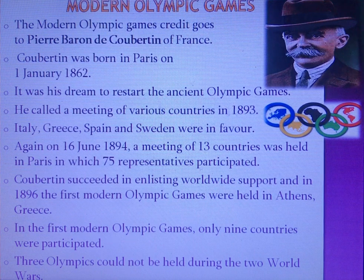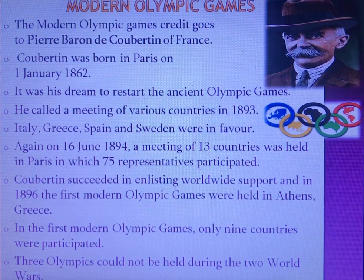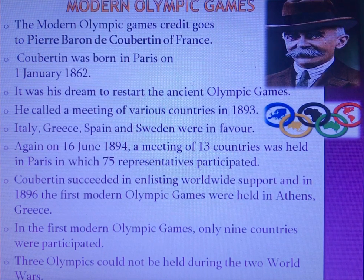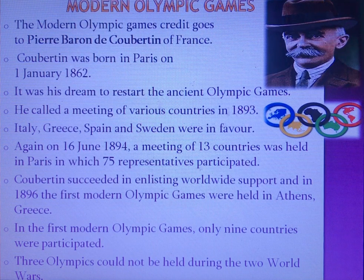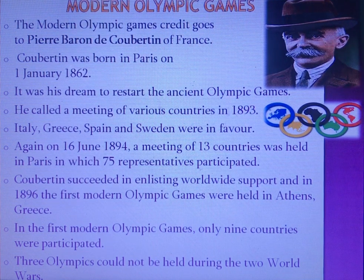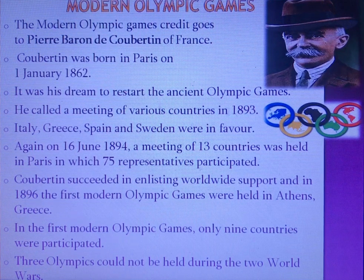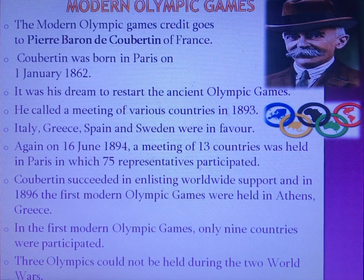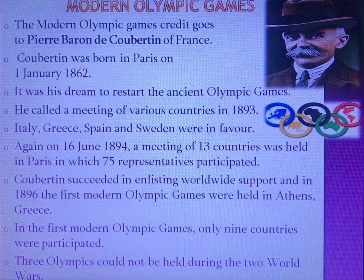Coubertin started the first Modern Olympic Games in 1896 in Athens, Greece, with only nine countries participating. Participation increased greatly — 207 countries participated in the 2016 Rio Olympics. The games are conducted every four years. Three Olympics could not be conducted because of the two World Wars.